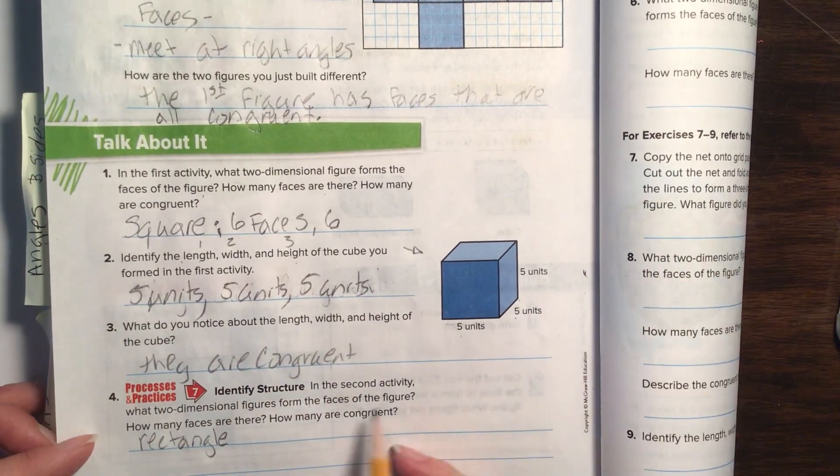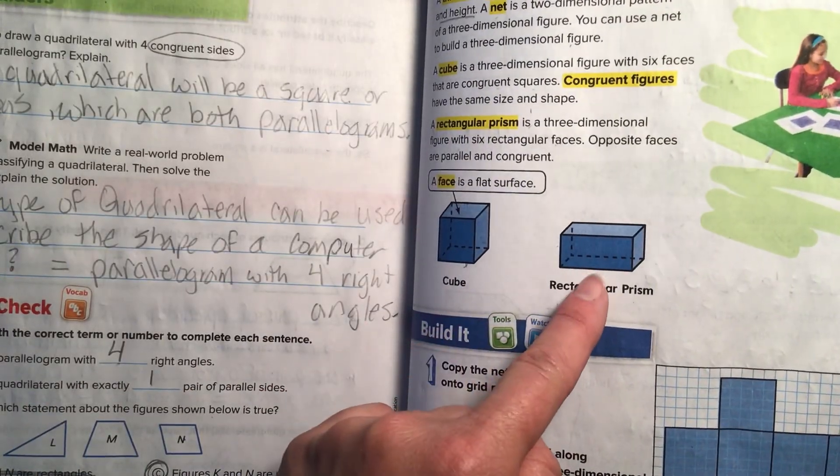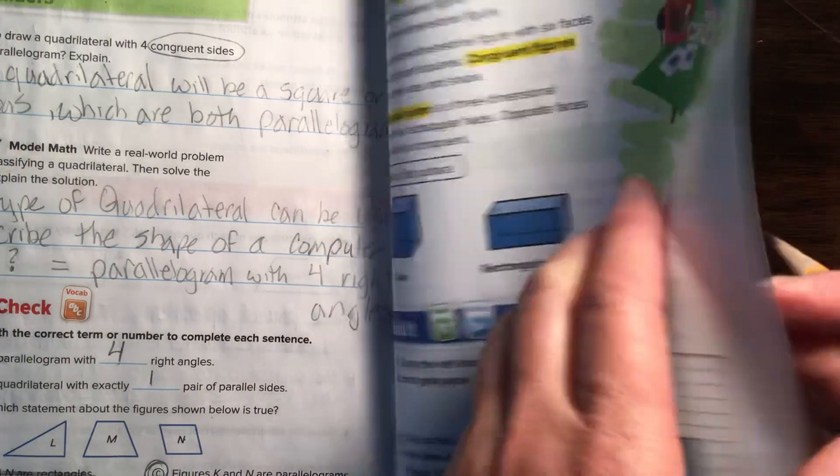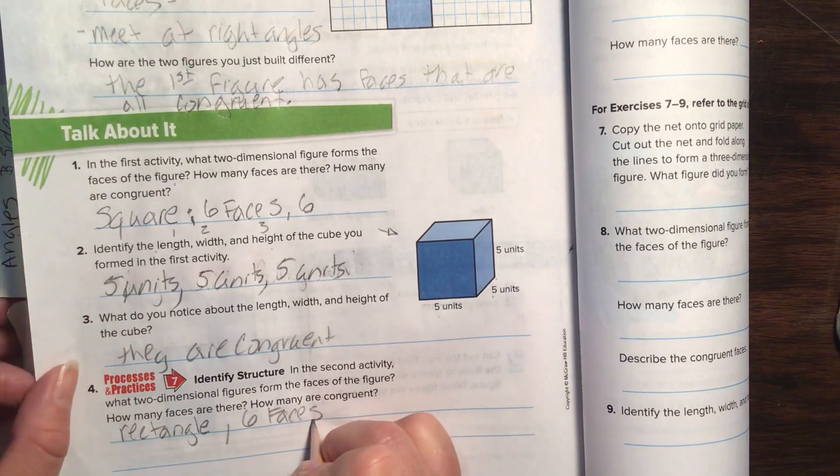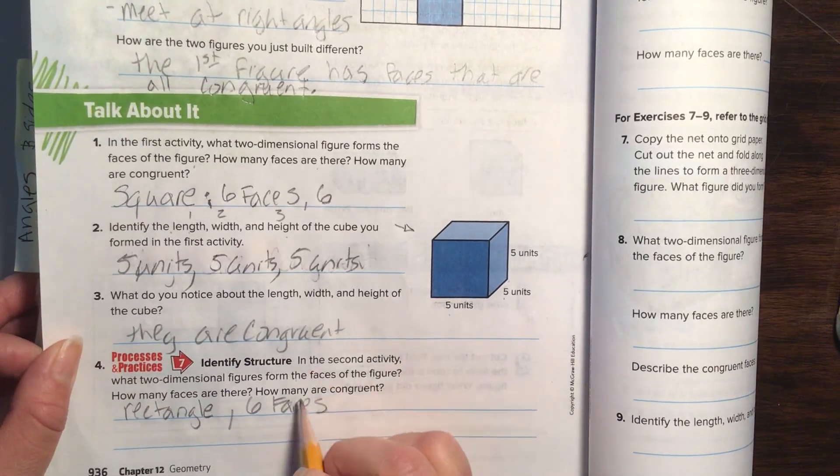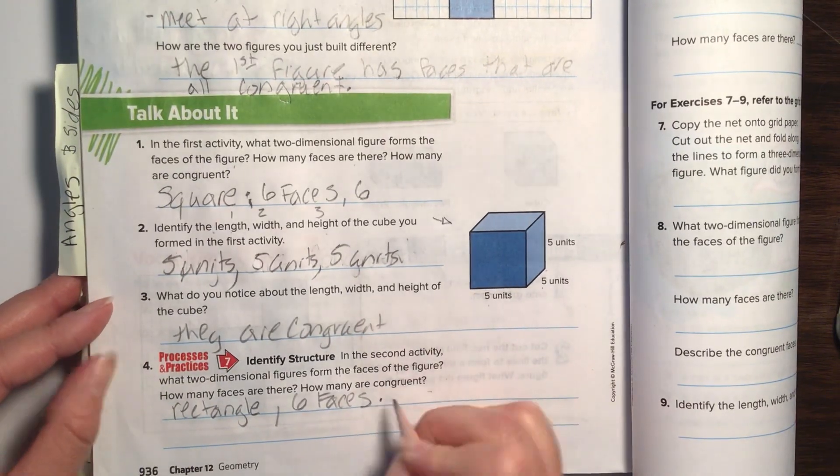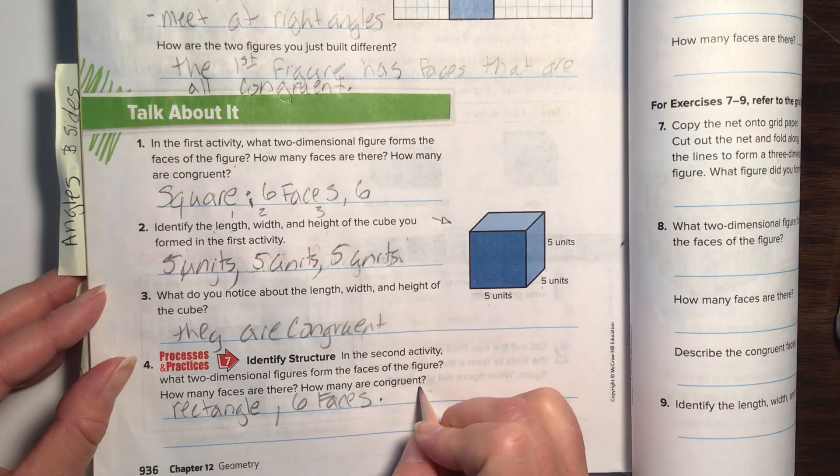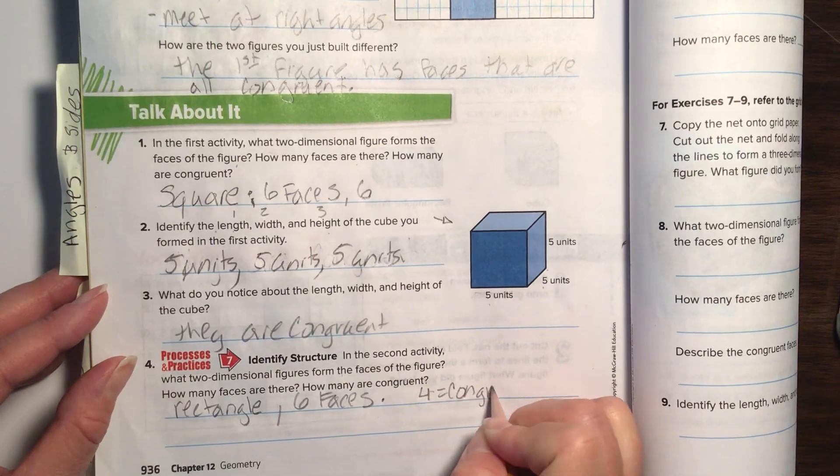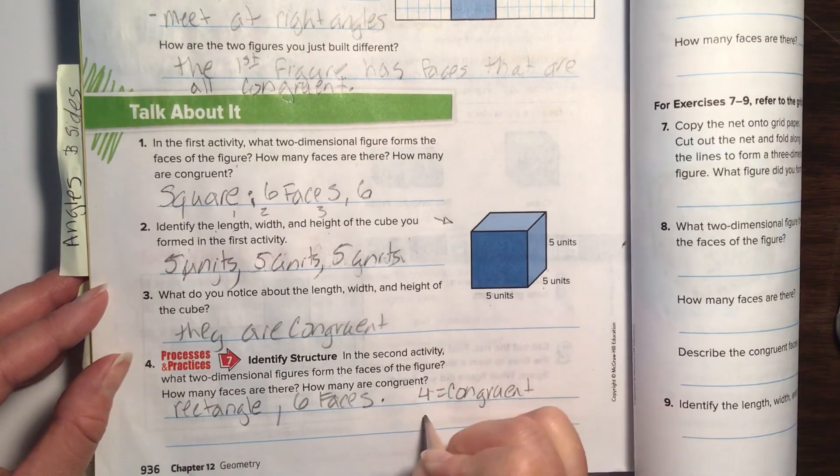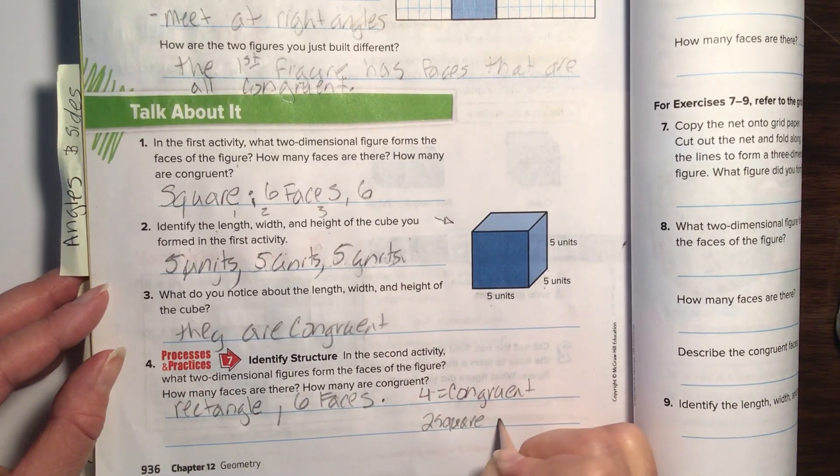And they want to know how many faces are there. Well, let's count. Faces, if we did a top and a bottom, one, two. And all around the edges. One, two, three, four, five, six. There are six faces. Now, they want to know how many are congruent. So, in rectangles, it's a little bit different. Four are congruent.